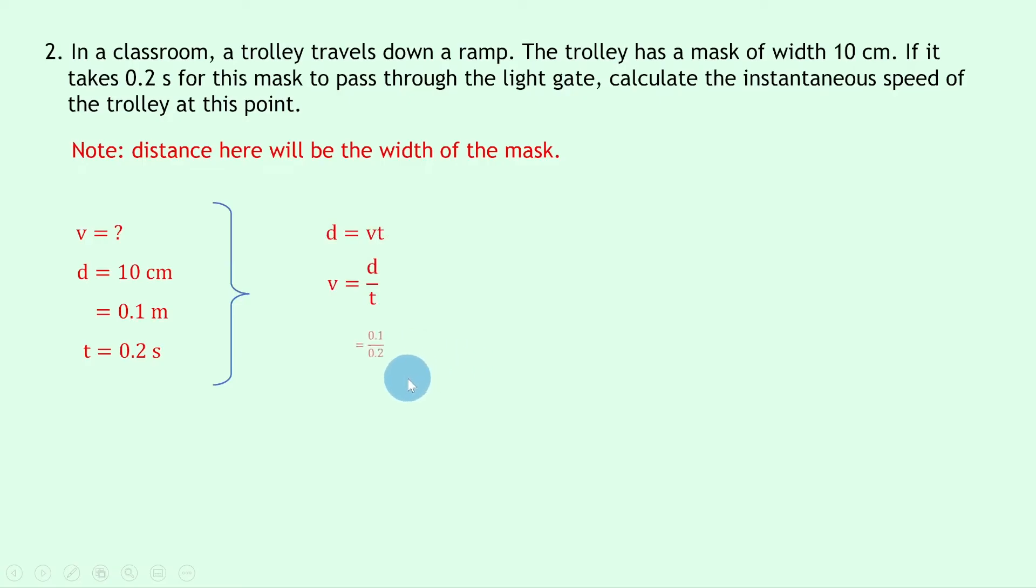Substituting in the numbers, we get 0.1 divided by 0.2, and that's the same as 1 over 2, or a half, which is the same as 0.5 metres per second.